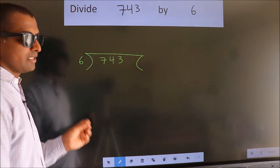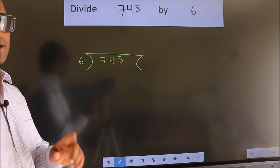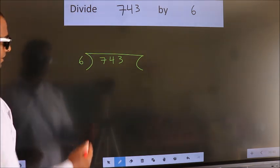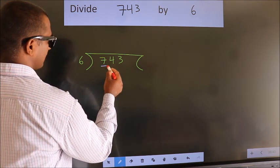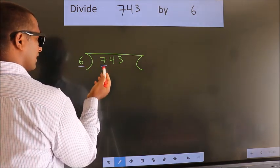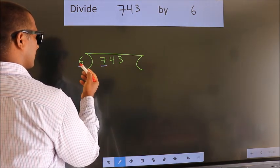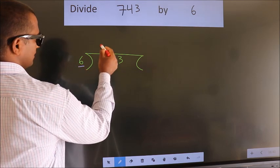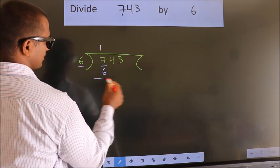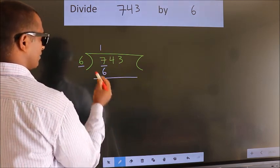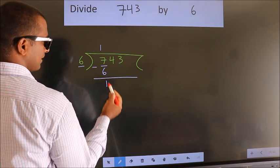This is your step 1. Next, here we have 7, here 6. A number close to 7 in 6 table is 6 times 1 is 6. Now, we should subtract. We get 1.